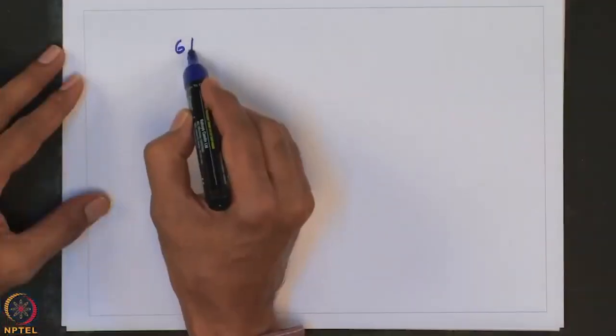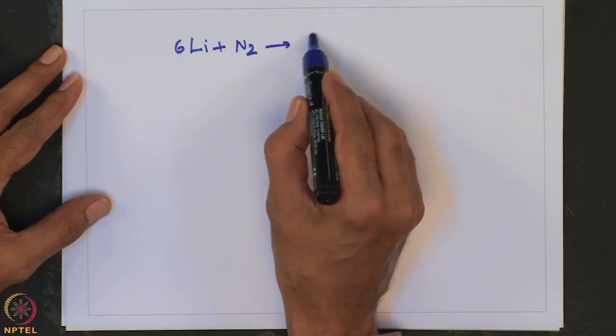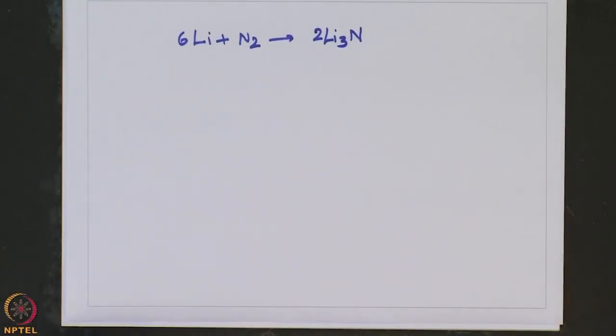Lithium directly reacts with nitrogen to form lithium nitride. For example, 6 equivalents of lithium treated with nitrogen gives 2Li3N. Lithium nitride is very stable because of very high lattice energy associated with it, due to the smaller Li+ ion and the small highly charged nitride ion N3−, despite having to break the strong N≡N triple bond that exists between the two nitrogen atoms, with bond strength of about 954 kJ/mol. The energy needed to break the N≡N bond essentially comes from the lattice energy of formation of lithium nitride.